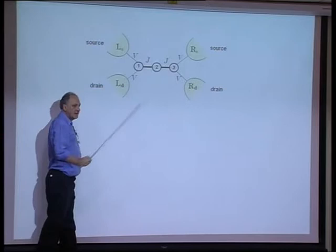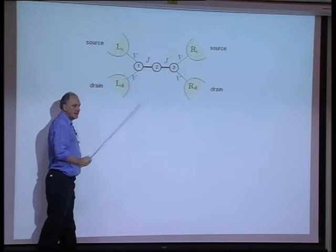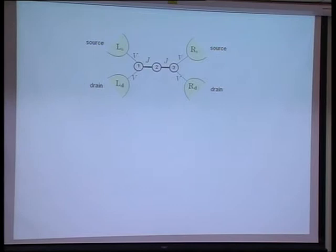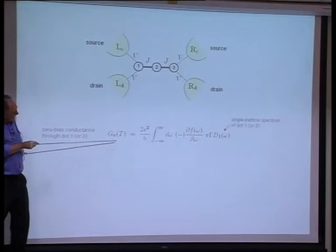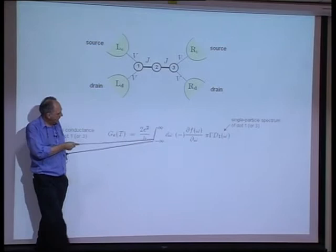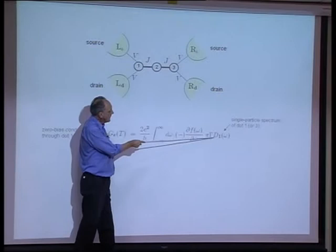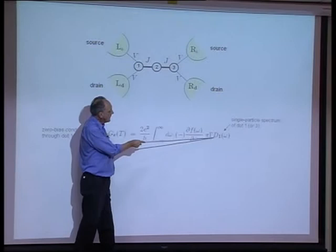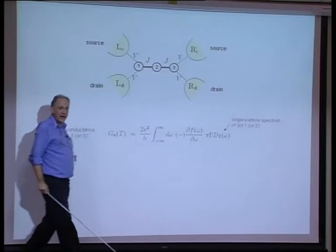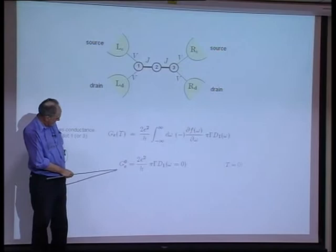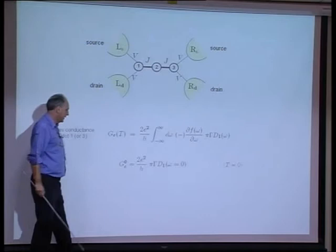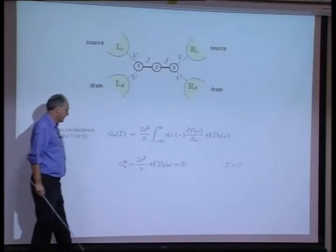Experimentally this would be relevant if we took the left and right leads, split them into two, applied source-drain bias across the system, and drove a current through the Anderson-like dot coupled to its respective lead. As one knows from work by Meir and Wingreen, the temperature dependence of the zero-bias conductance is given by the conductance quantum 2e squared over h times the integral of minus df/domega times pi Gamma times the single-particle spectrum of dot one at frequency omega. So the conductance at T equals zero is 2e squared over h times pi Gamma times the single-particle spectrum at the Fermi level.